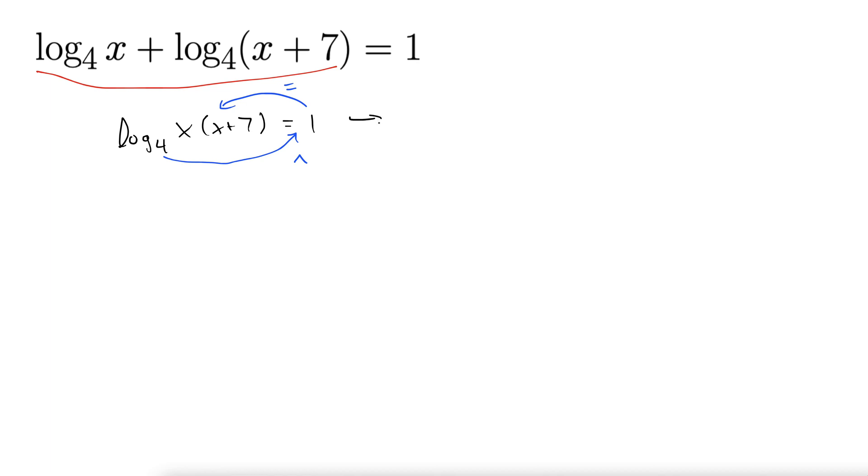So now we're looking at 4 to the power of 1 equals x times x plus 7. Remember that x squared, anything with x squared in it, likes to be set equal to 0, always. It's easy to get lost in these problems, but if you remember that x squared likes to be set equal to 0, that gives you some direction.